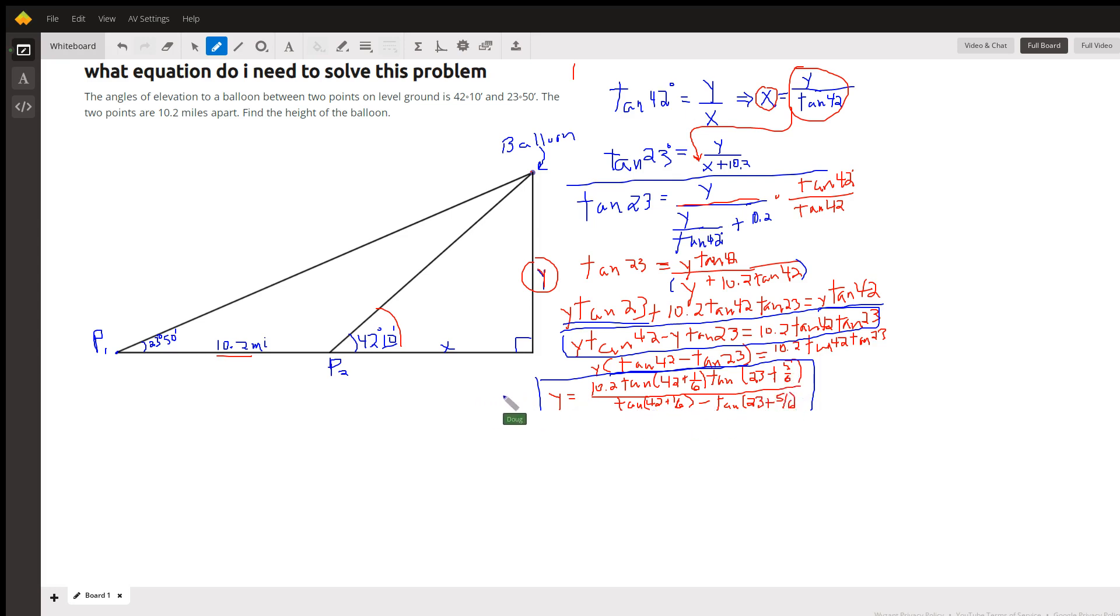Okay, so you can enter that on a calculator and get your answer for Y. There you go. I'll include a link to the Desmos graph that generated this diagram. And it will also include an answer for the height of the balloon. There you go. Hope that helped. If you have any questions, post a comment.